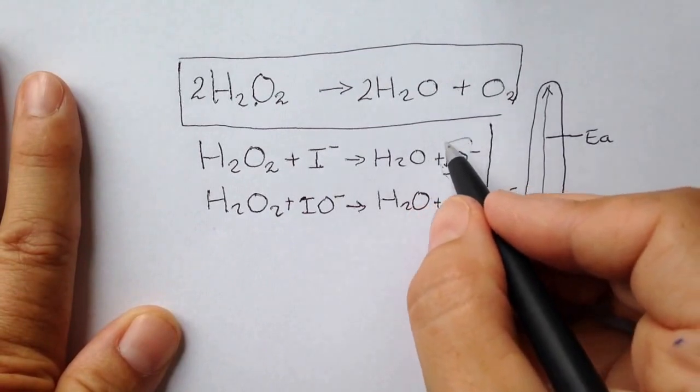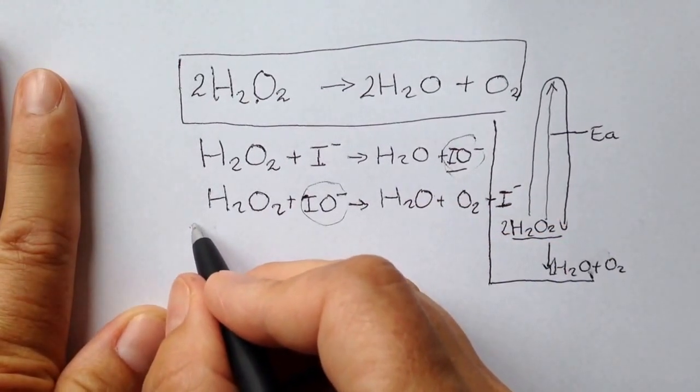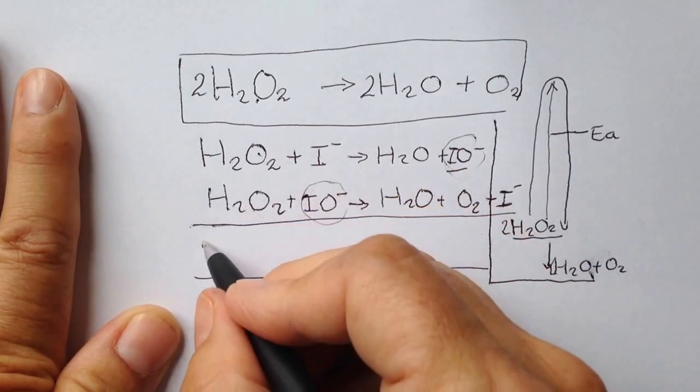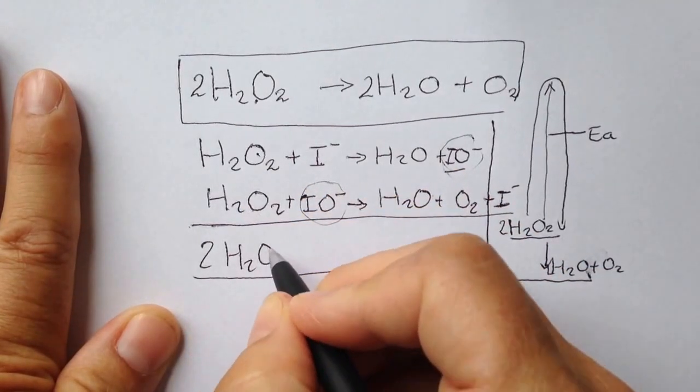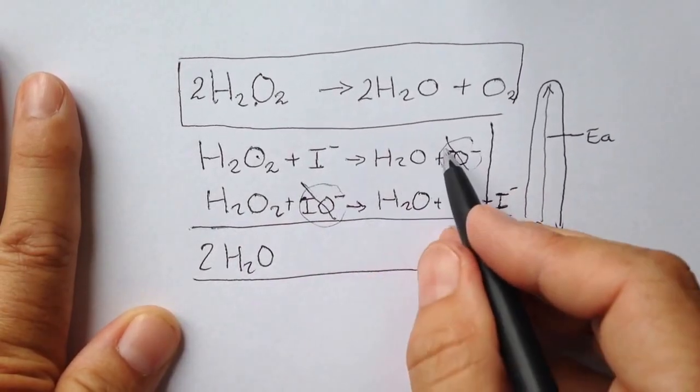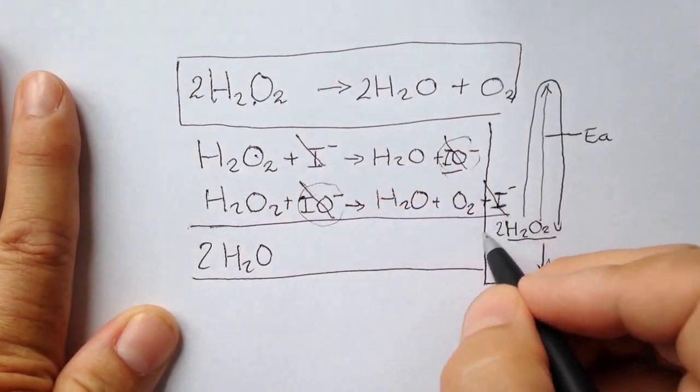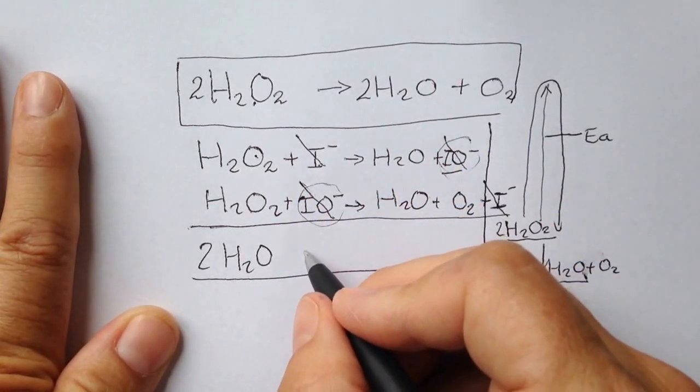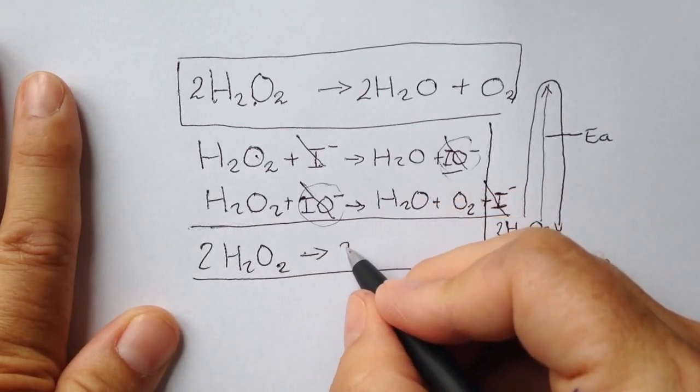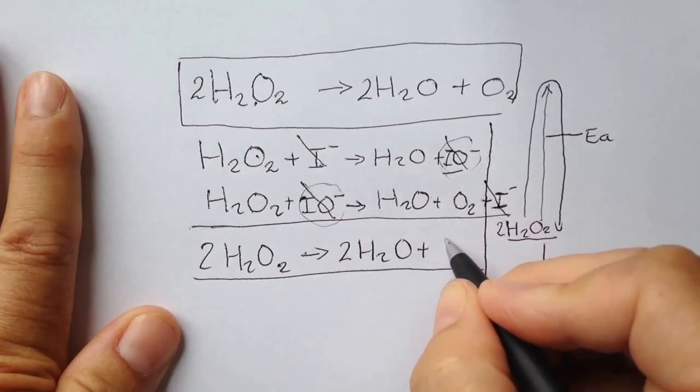This is the intermediate, and in the second step the intermediate got consumed. If we add the two equations together, two moles of hydrogen peroxide, we can cancel out this intermediate because it appears on both sides. We can cancel out the iodide ions because they also appear on the other side, and therefore it looks as if our hydrogen peroxide has decomposed spontaneously on its own to form water and oxygen gas.